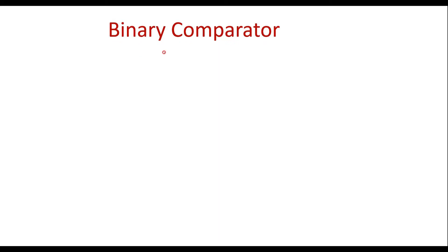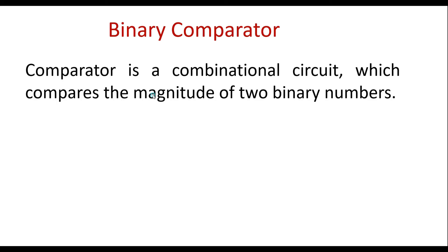In this video I will discuss binary comparators — the definition of a comparator and how to implement a one-bit binary comparator. A comparator is a combinational circuit which compares the magnitude of two binary numbers. Assume that this is a block of comparator.